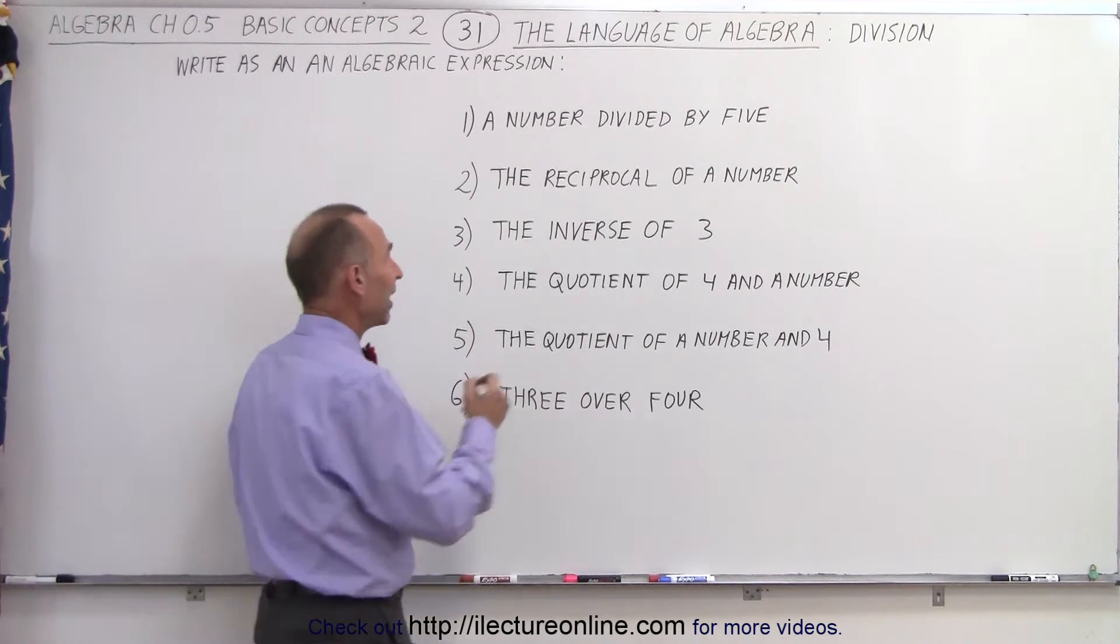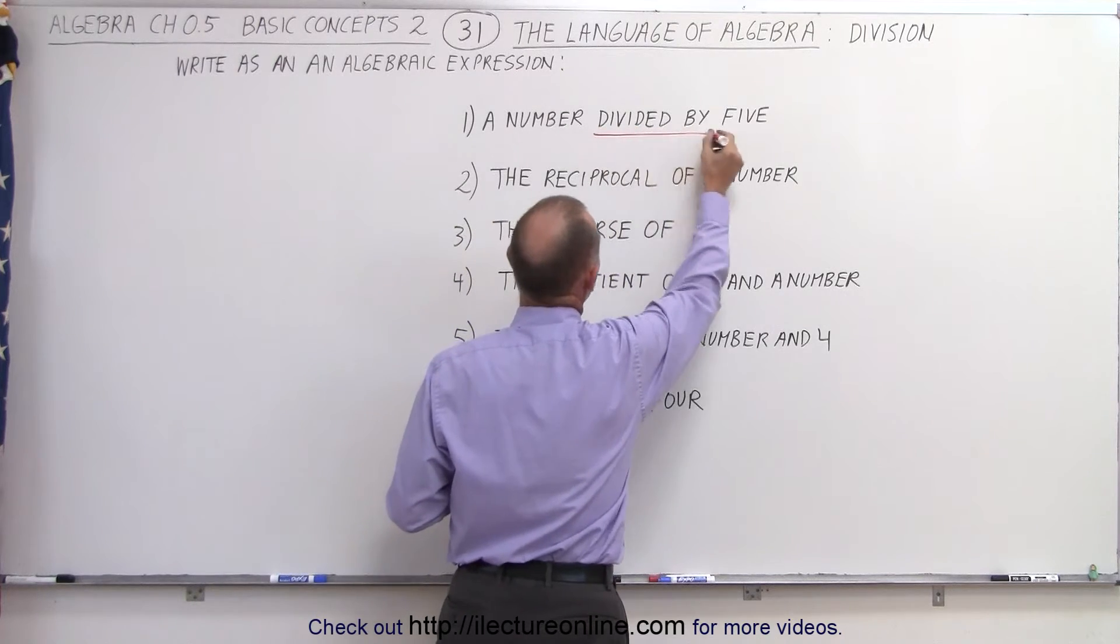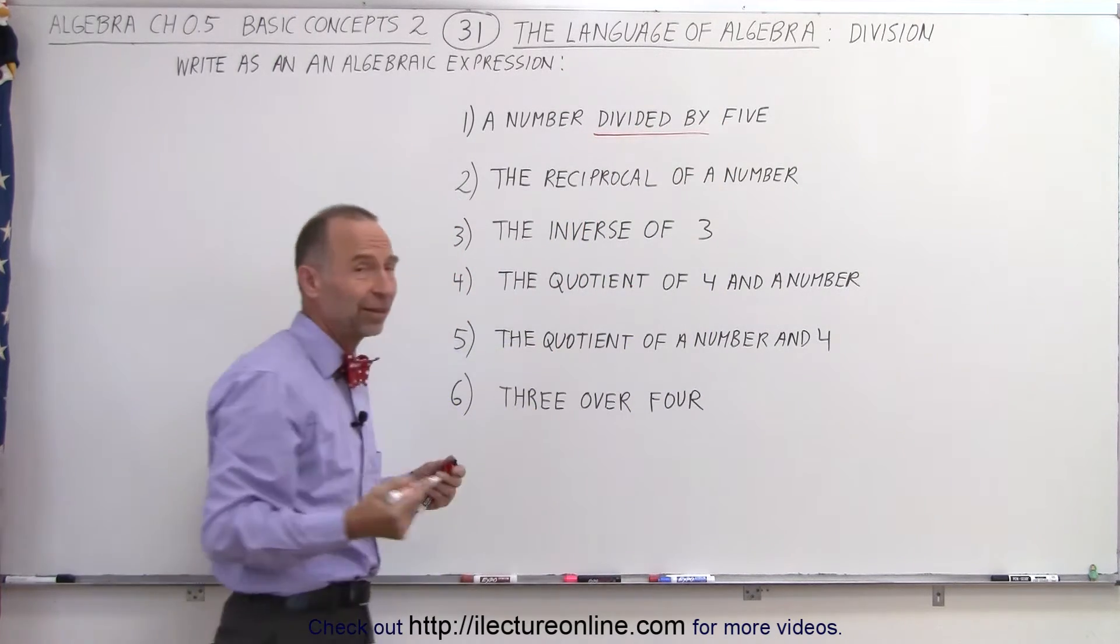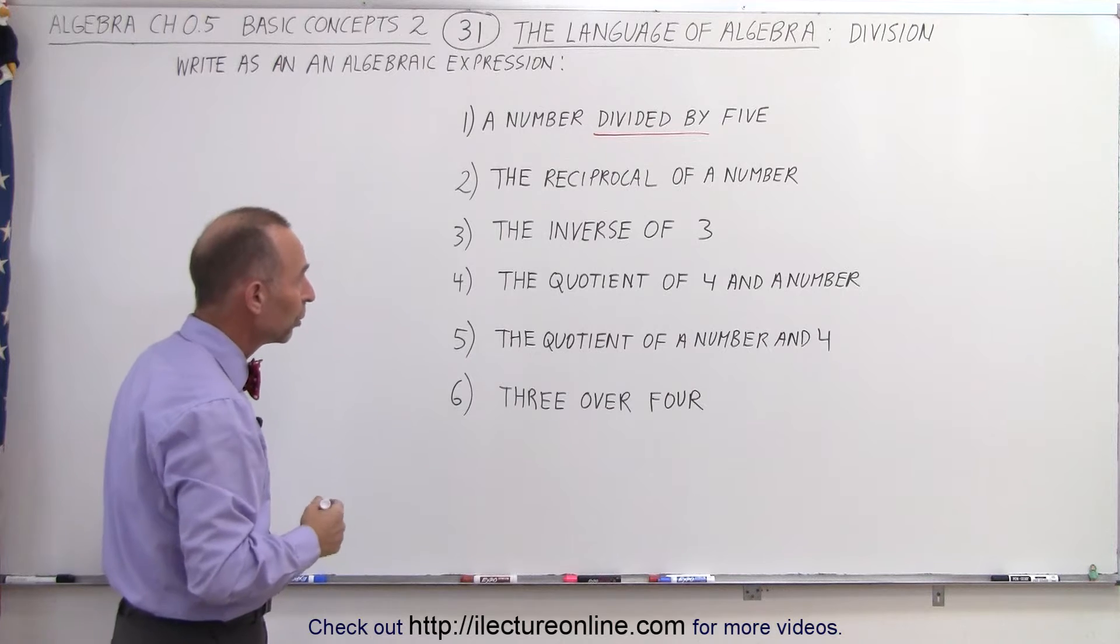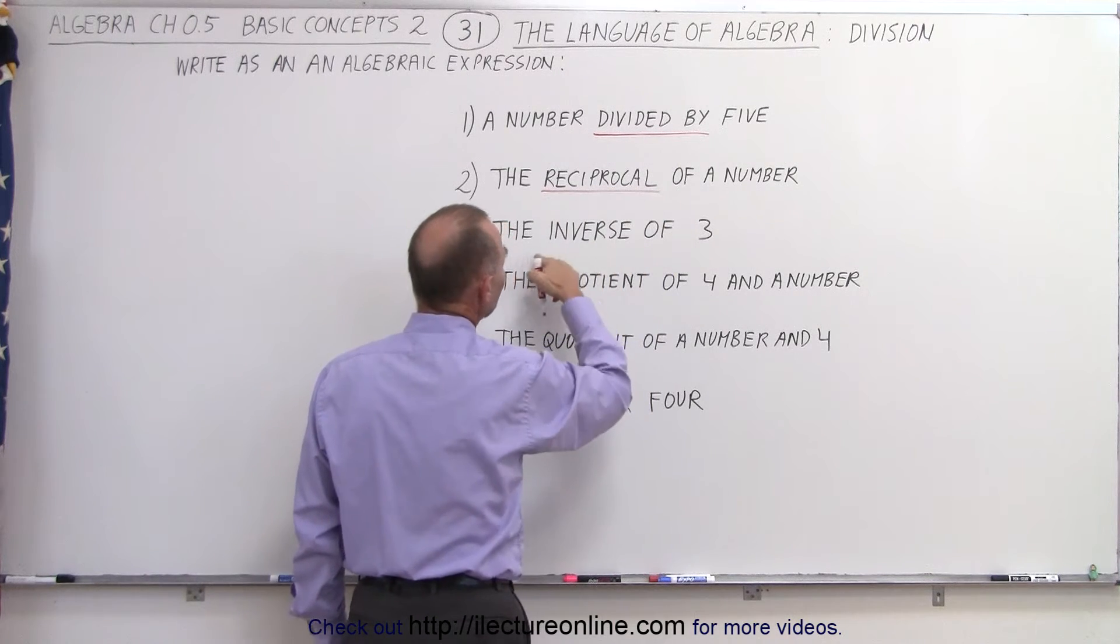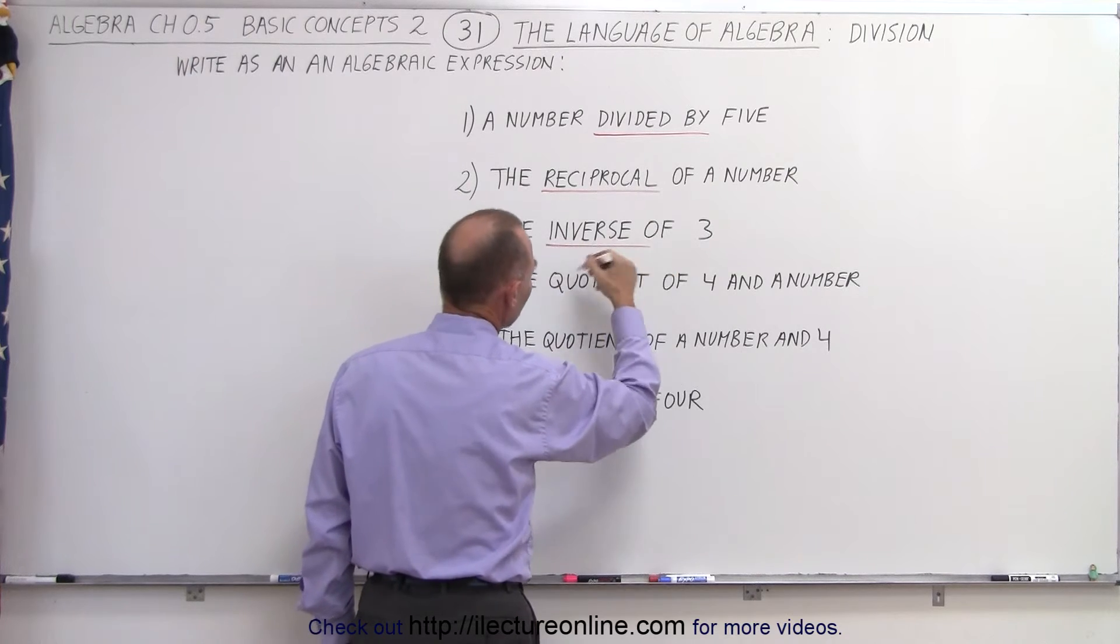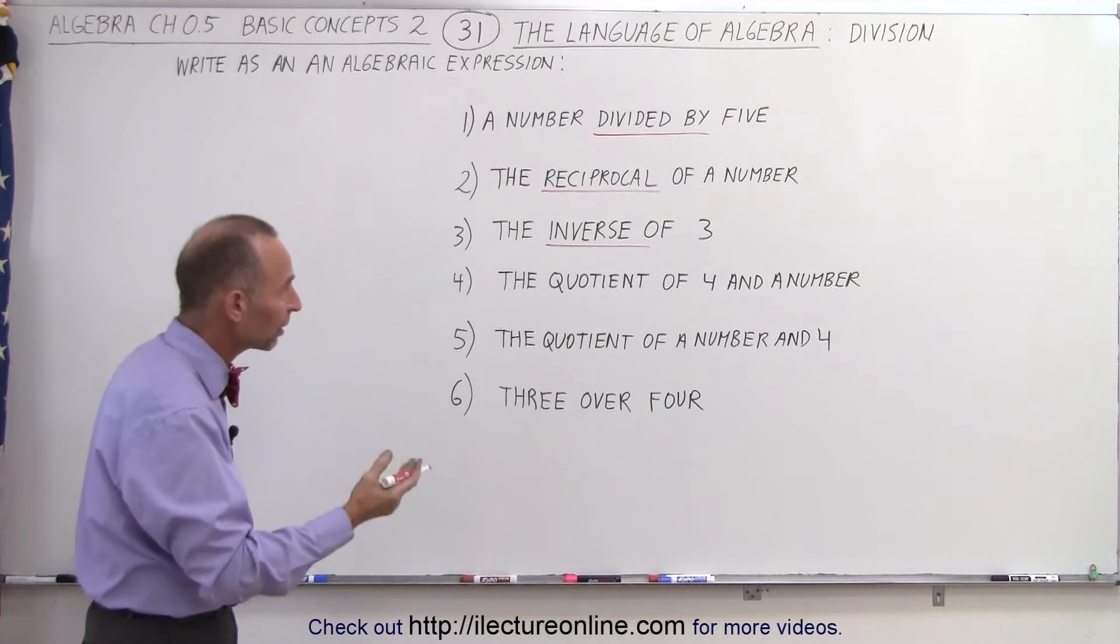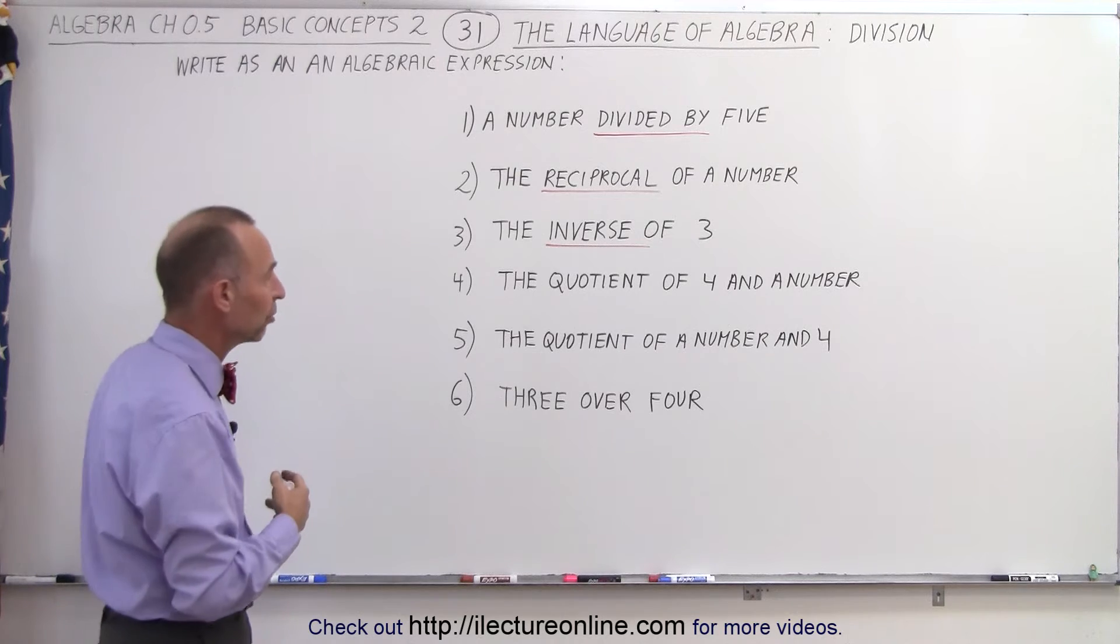If we see divided by, that does imply division. The reciprocal of a number also implies division, and the inverse of a number, or in this case, the inverse of 3, should also imply division. So reciprocal and inverse imply division.